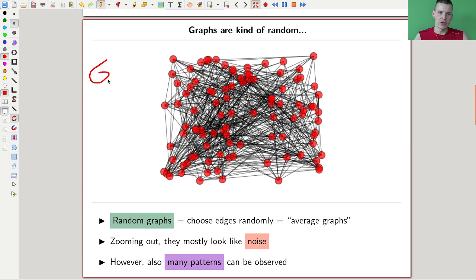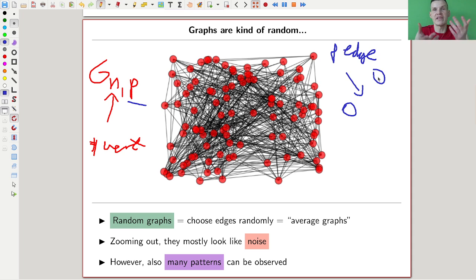So what I will do is use the following model of random graphs, which is usually called G(N,P). N is the number of vertices. And P is a probability. So for every pair of vertices, with probability P, I put an edge. So if P is a half, then you essentially flip a coin for every pair of vertices, whether you want to put an edge or not. This is usually called a random graph.